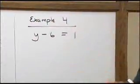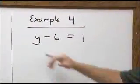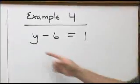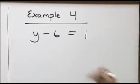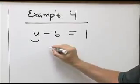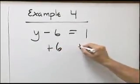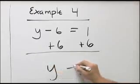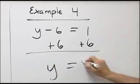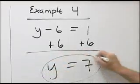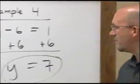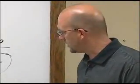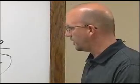Our final example, example number 4, another subtraction problem. y subtract 6 equals 1. To undo my subtraction, I will add 6, which must be done to both sides. y then will equal 1 plus 6 or 7. Does 7 minus 6 equal 1 for our check? And the answer is yes, another correct answer.